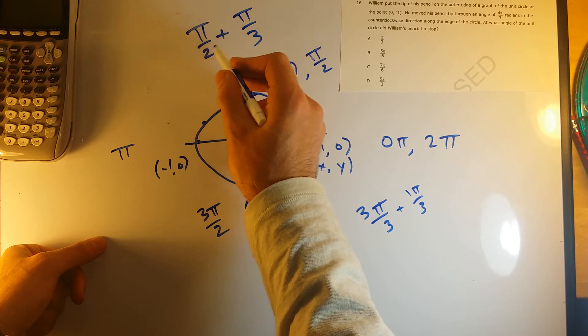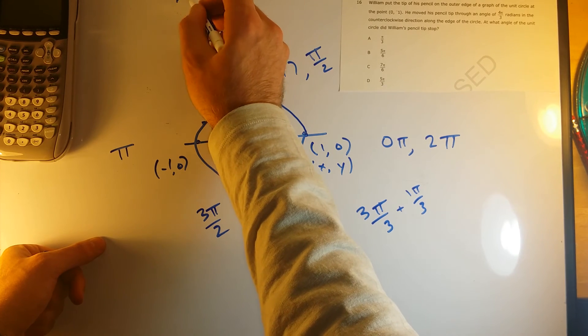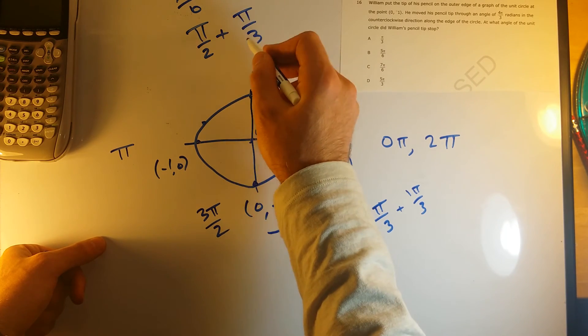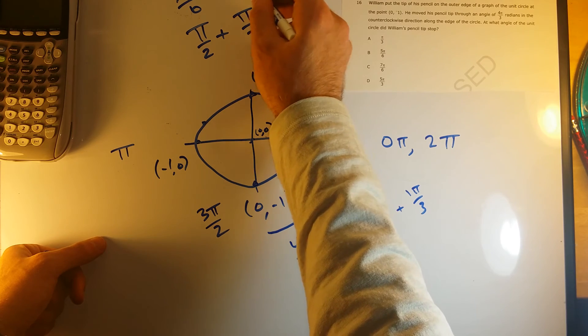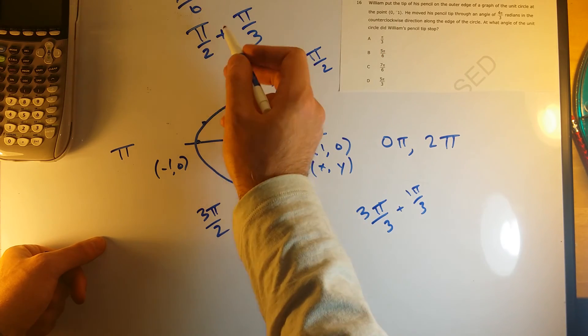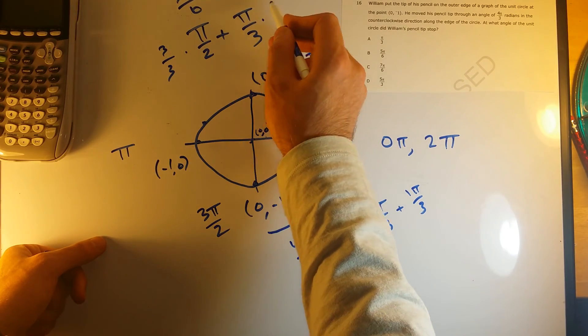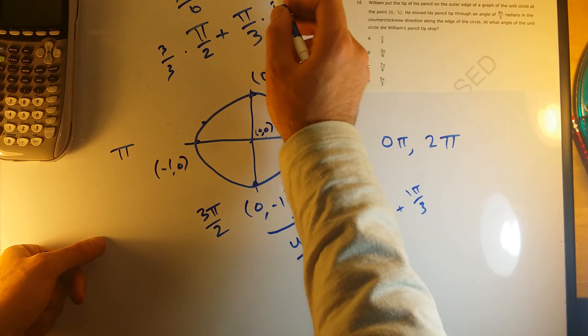Okay, and then just to make these, I could rewrite these with common denominators. So if I were to summarize, π over 2 would become 3π over 6. π over 3 would become 2π over 6. I just multiplied this one by 3 over 3. I multiplied this by 2 over 2 to get a common denominator of 6.